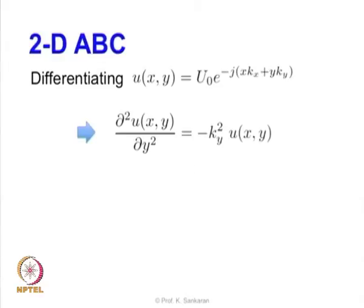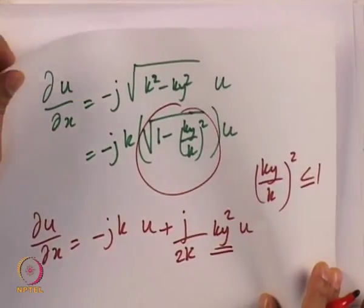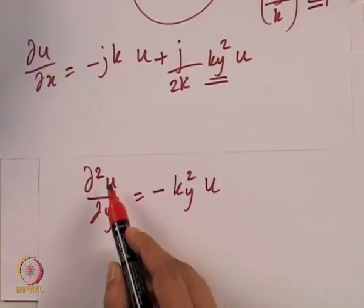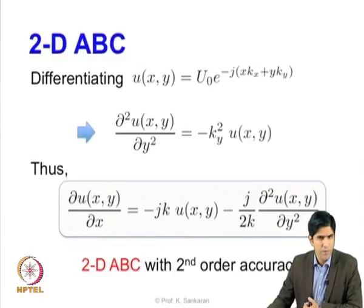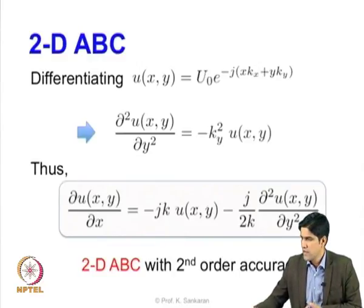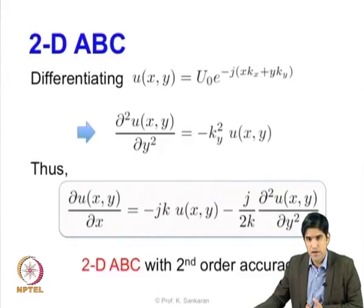Once we know that ky²·u = −∂²u/∂y², we substitute it into the equation for ky²·u, obtaining a second-order accurate ABC for the two dimensional problem. This boundary condition is called the Engquist–Majda boundary condition, named after two eminent mathematicians who introduced this type of boundary condition. The reflection coefficient for this second-order accurate condition is going to be improved compared to the first-order case.